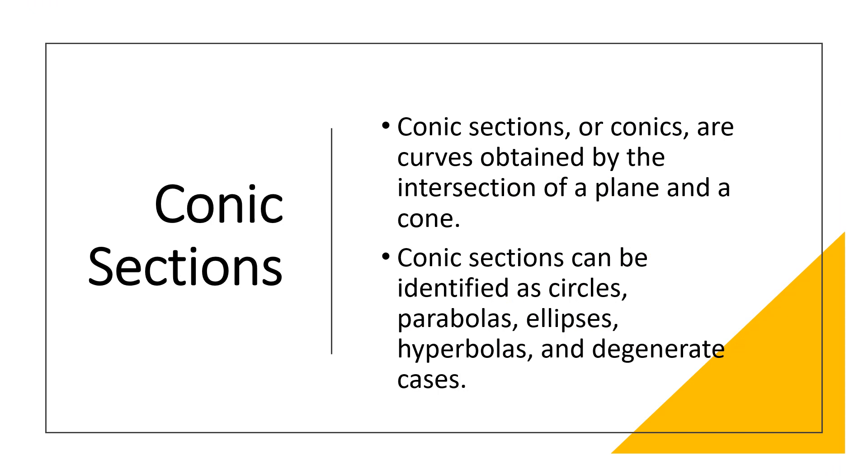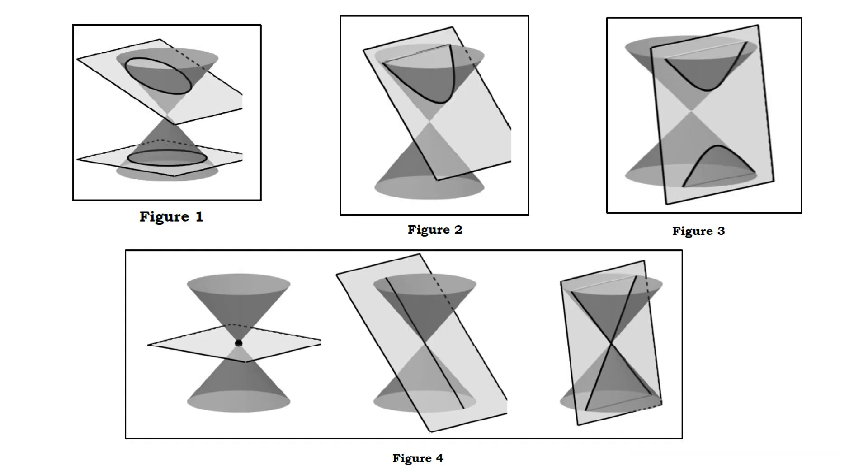Conic sections or conics are curves obtained by the intersection of a plane and a cone. Conic sections can be identified as circles, parabolas, ellipses, hyperbolas, and degenerate cases. Conics can be found in nature and have many applications in other fields.